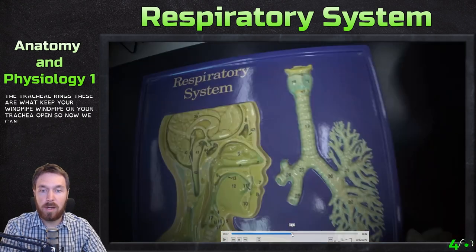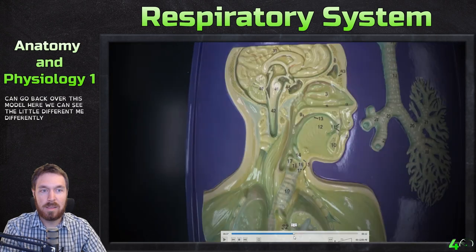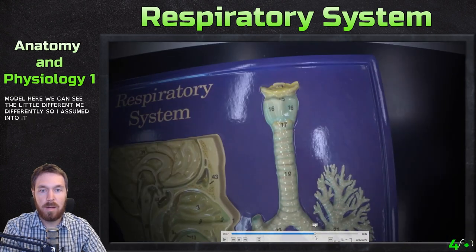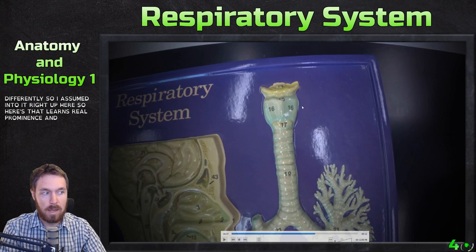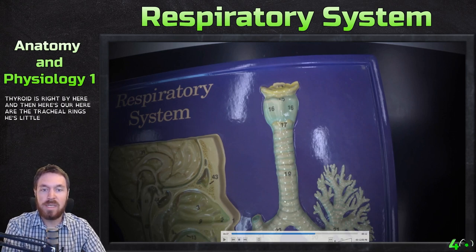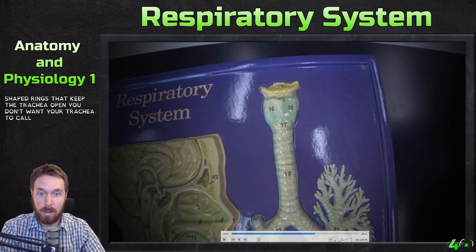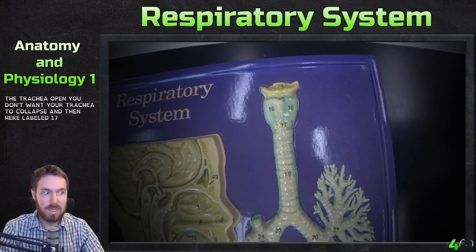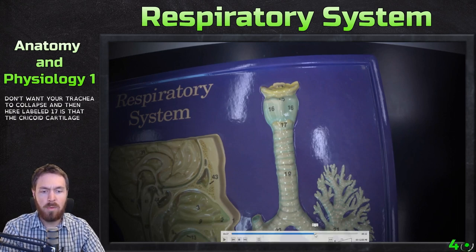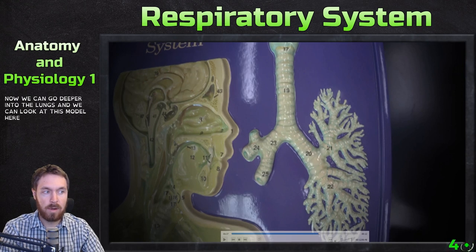After the cricoid cartilage, we have the tracheal rings — these are what keep your windpipe or trachea open. Zooming into this model, here's that laryngeal prominence and the thyroid cartilage. Here are the tracheal rings, those little C-shaped rings that keep the trachea open so it doesn't collapse. Labeled here is that cricoid cartilage. Now we can go deeper into the lungs.